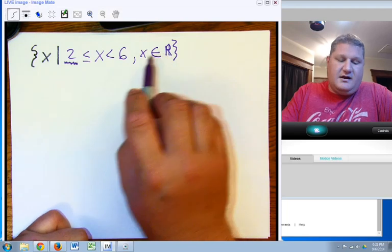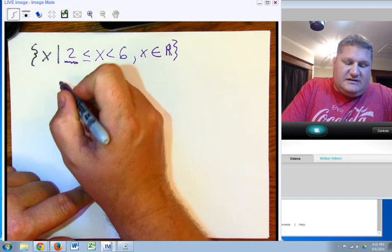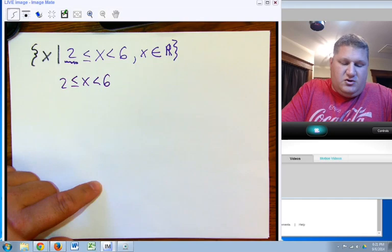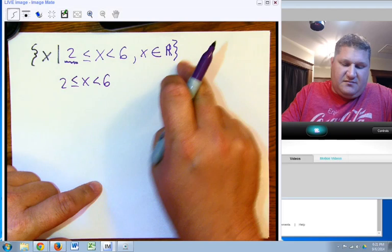So it's all real numbers between 2 and 6. If I were to list it in a more traditional format, we'd simply say 2 is less than or equal to x is less than 6. The assumption is it's going to be the real numbers.